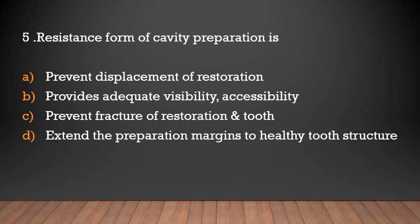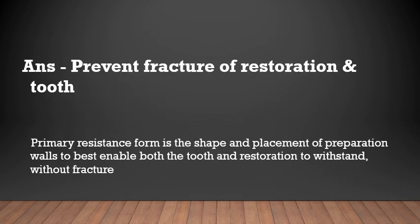Resistance form of cavity preparation is: prevent displacement of restoration, provide adequate visibility and accessibility, prevent fracture of restoration and tooth, or extend the preparation margins to healthy tooth structure? The answer is prevent fracture of restoration and tooth. Primary resistance form is the shape and placement of preparation walls to best enable both the tooth and restoration to withstand fracture.